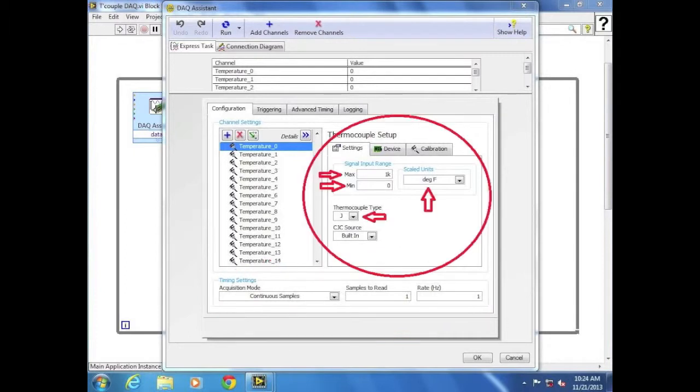Under the settings sub-tab, ensure that signal input range max is set to 1k and that min is set to 0. Scaled units is to be set to degrees Fahrenheit, and thermocouple type is set to J.